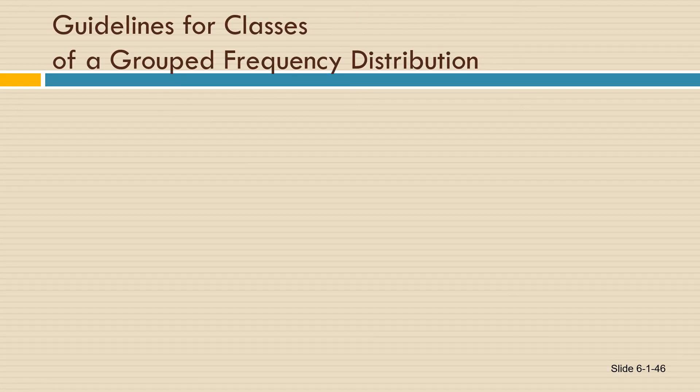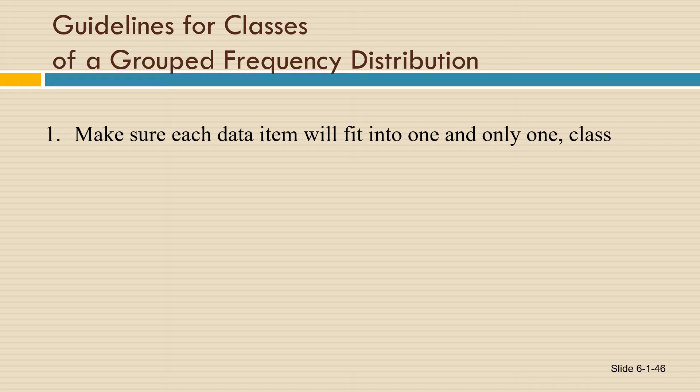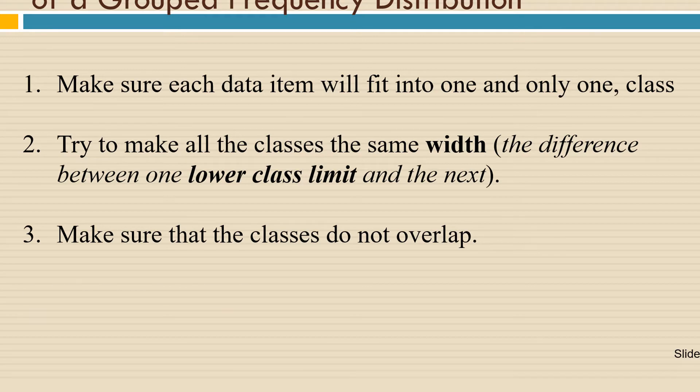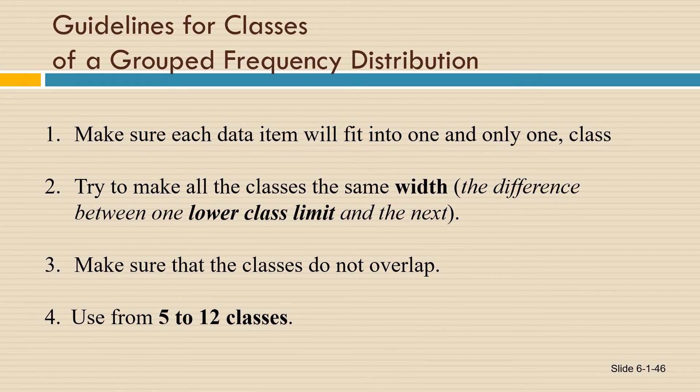If you're asked to set up a grouped frequency distribution, there are some guidelines that you have to keep in mind. First, make sure each data item will fit into one and only one class. Second, try to make all the classes the same width. Make sure that the classes do not overlap and use from 5 to 12 classes. This is a rule of thumb that statisticians use.